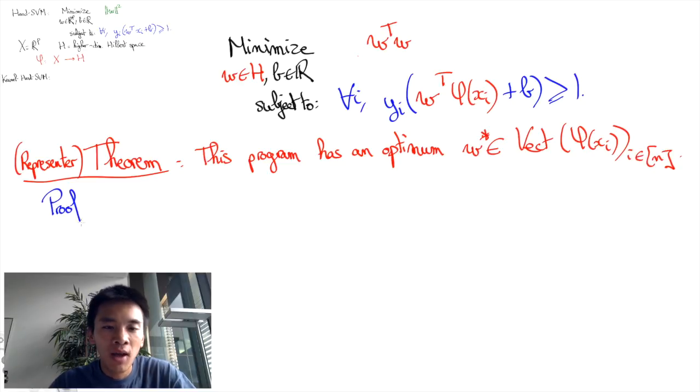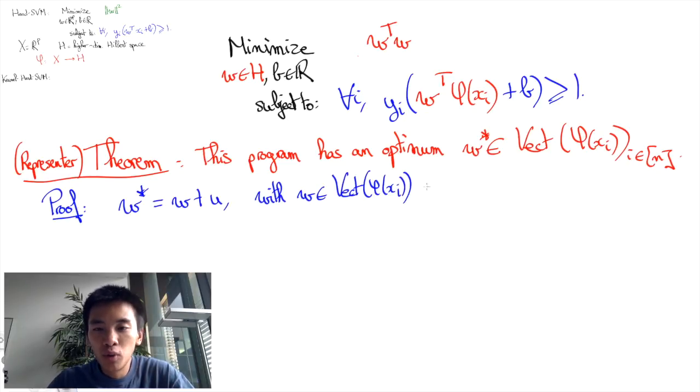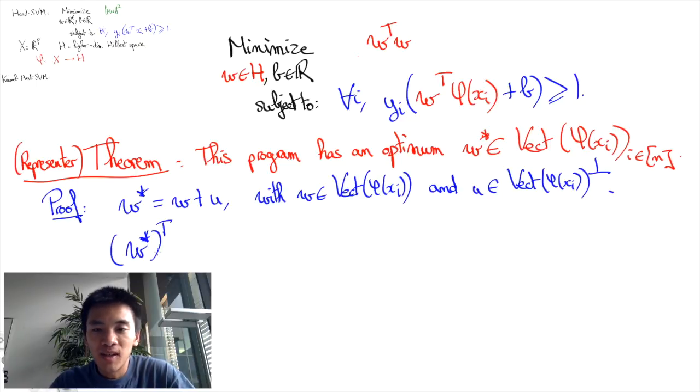Let's prove the theorem. We can always decompose W star into a sum W plus U, where W belongs to the space spanned by the phi of XI and U to its orthogonal. But then W star transpose phi of XI is equal to W transpose phi of XI plus U transpose phi of XI.